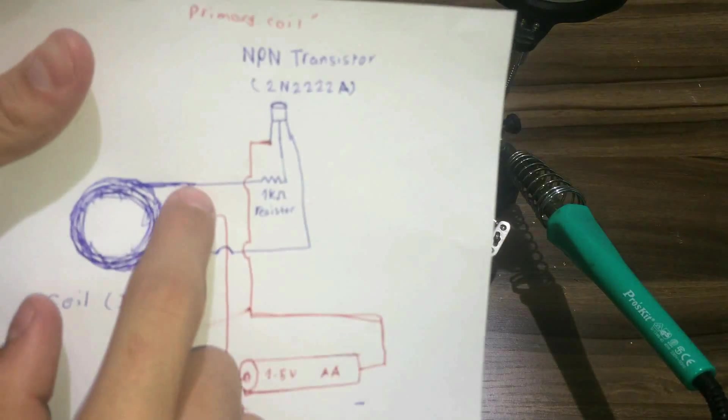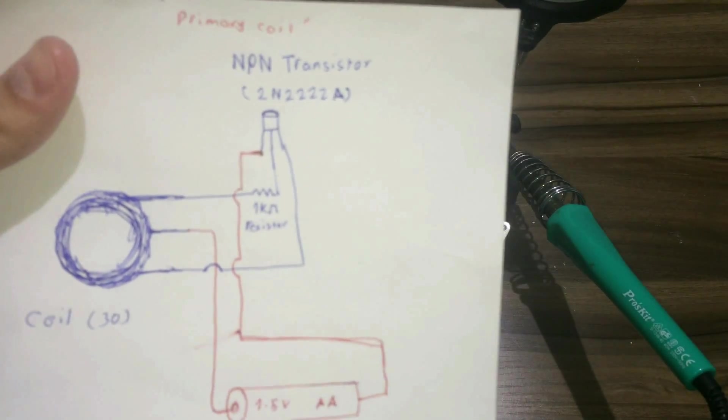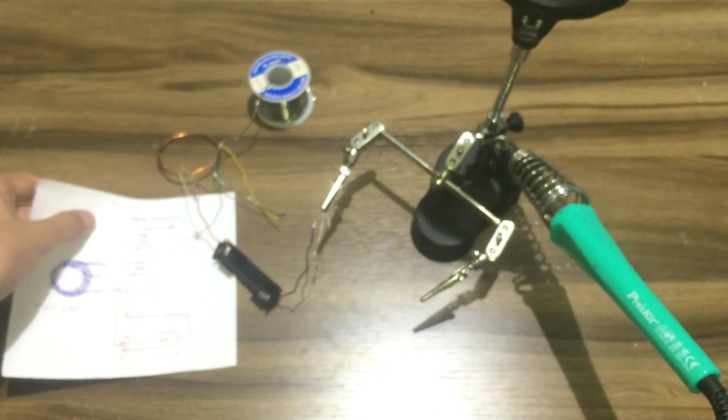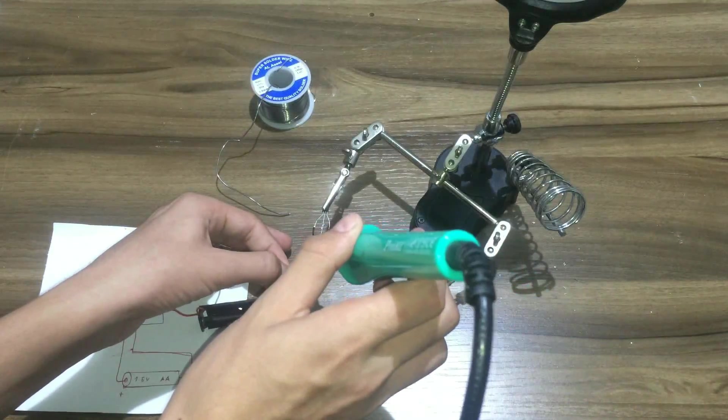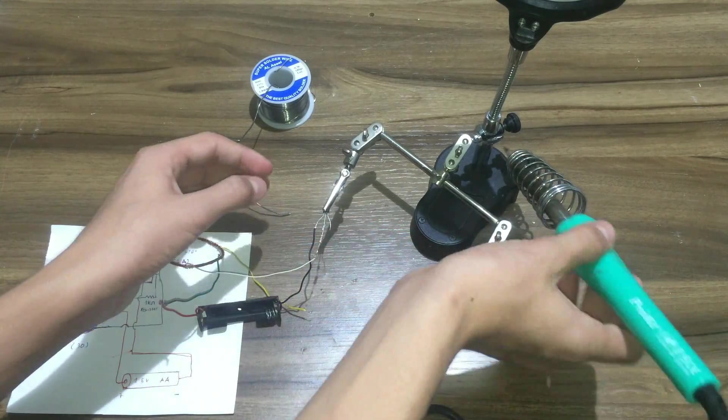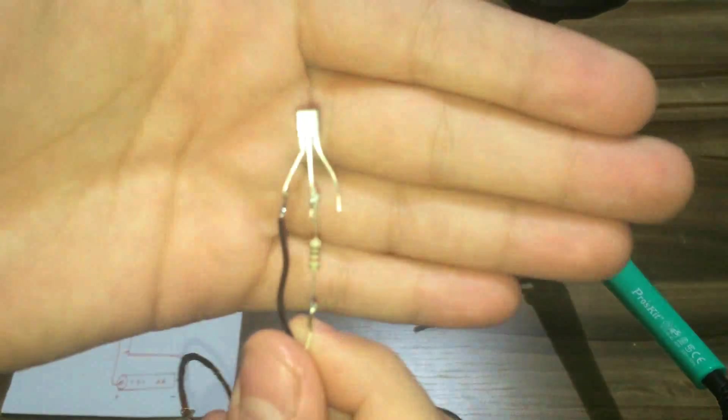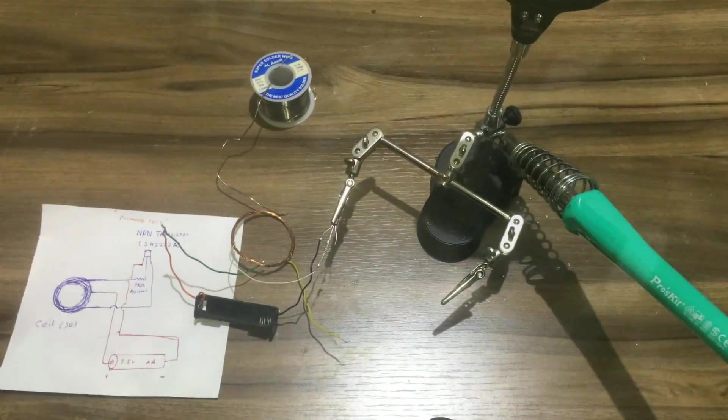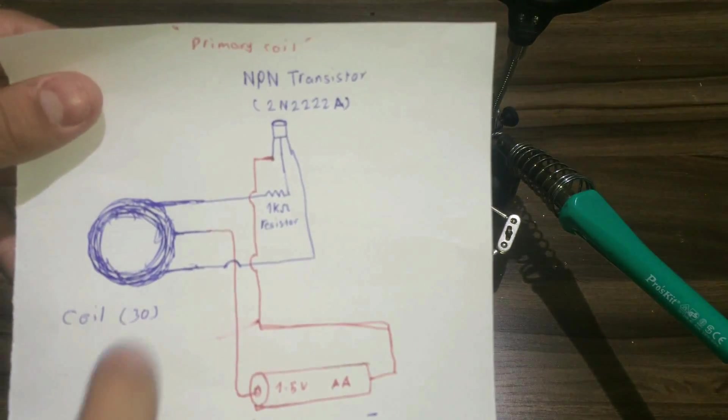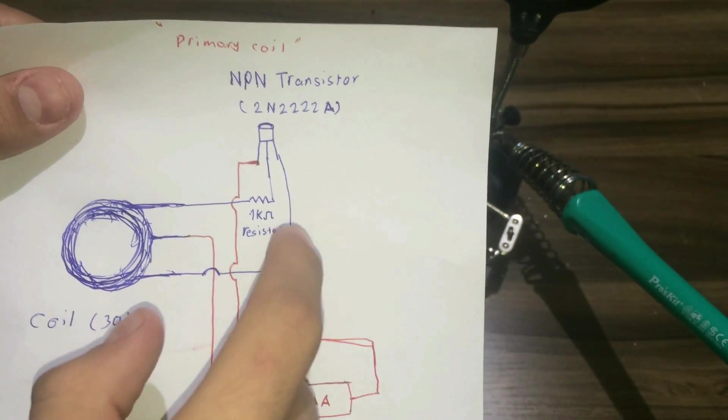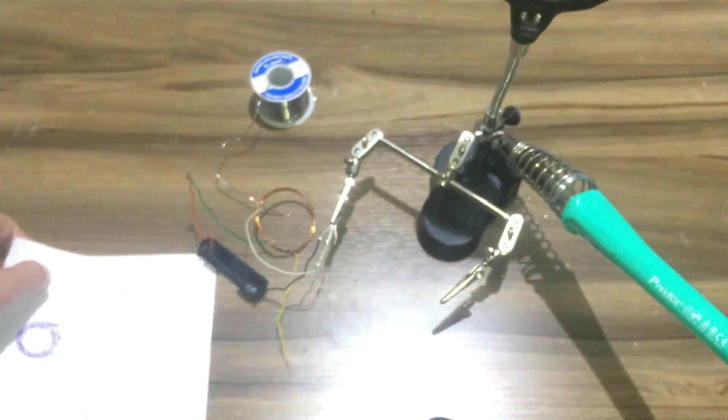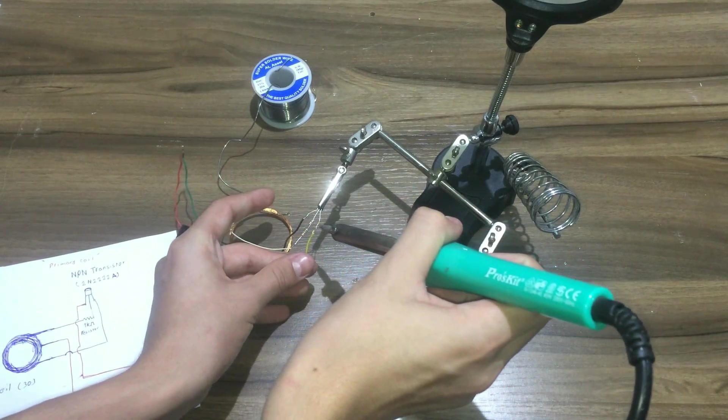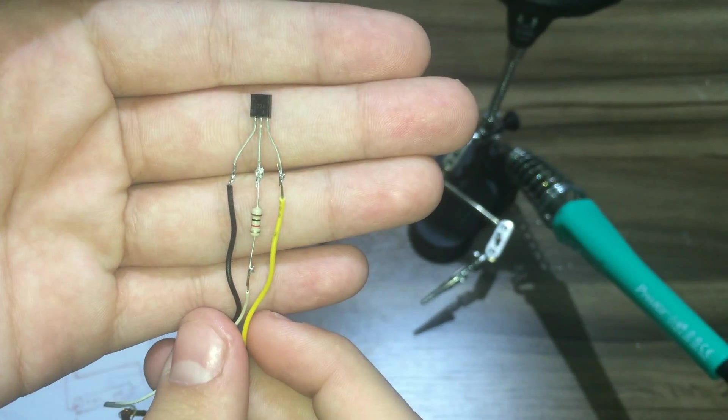Then I will connect the right side of the coil, which is white, to the 1K resistor, just like this. And finally, I will add the left side of the coil to the right side of the transistor. The color of the wire is yellow, just like this.